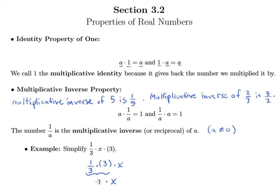Then I have my x, but of course the identity property of one tells me if I multiply anything by one, I just get that thing back. So my simplified version of this expression is just x.